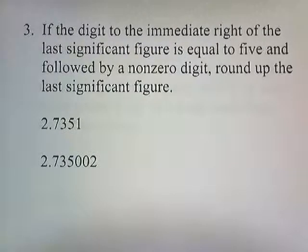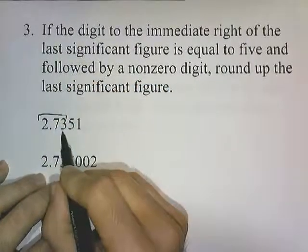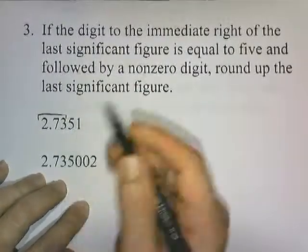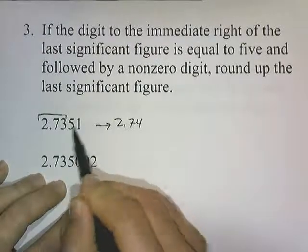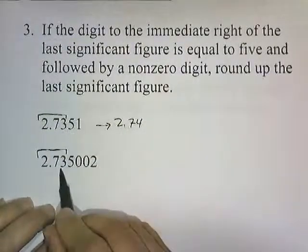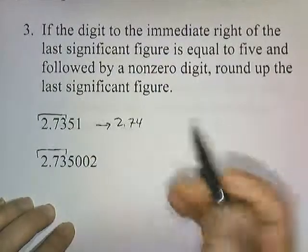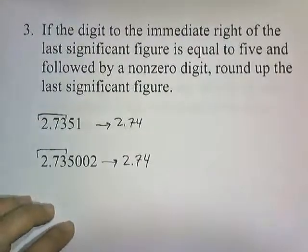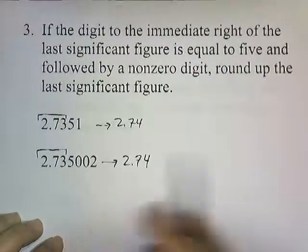If the digit to the immediate right of the last significant figure is equal to 5 and followed by a non-zero digit, round up the last significant figure. Rounding to three digits: this digit is followed by 51, and since 51 is greater than 5, you round up to 2.74. Similarly, if followed by 5002, that is also greater than 5, so we round up to 2.74.